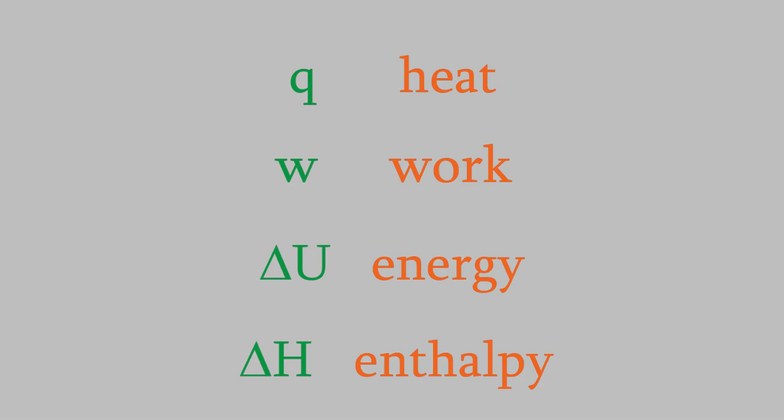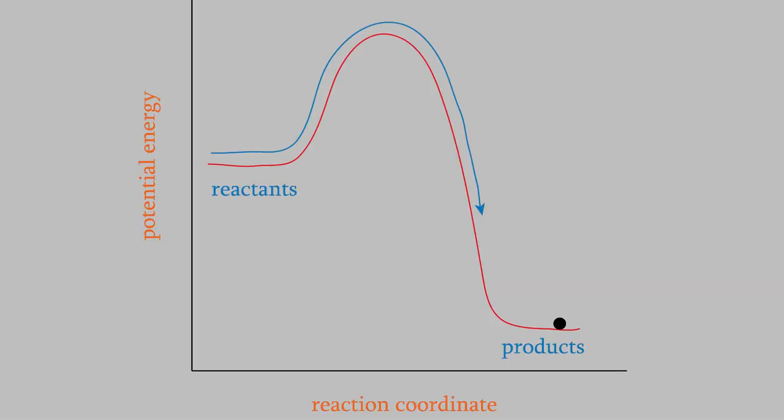At first, this might seem surprising. You know from experience that a system is more stable when it has a lower energy, so it might seem like a reaction must simply have a negative enthalpy in order to be possible. As you might remember, when ΔH is negative, the reaction is exothermic, and you're probably familiar with lots of exothermic reactions.